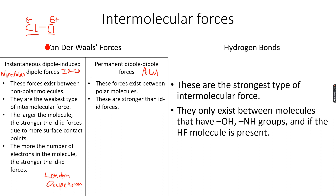This partial charge separation is not because of permanent polarity in the molecule — it's because the electrons, while moving, temporarily shift toward one atom. This is called an instantaneous dipole because it only lasts for a particular instant; it's not permanent.